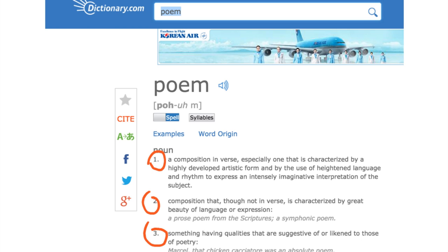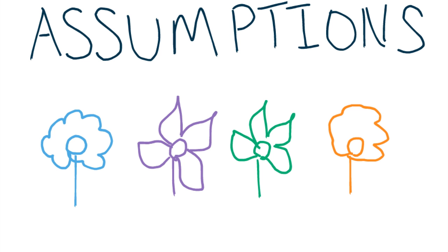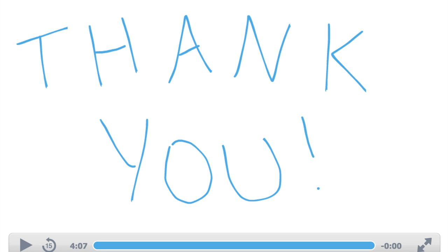Now earlier, I had made an assumption that we are using the second definition of the word posy — a short motto or line of verse inscribed inside a ring — because of the word that followed in the title, poem. But I could be incorrect. This text could be a defense both of flowers and poems, so I want to be sure to keep an open mind as I read and actively search for the answers to my questions about what the text is going to be about. Thank you so much for listening and watching this video.